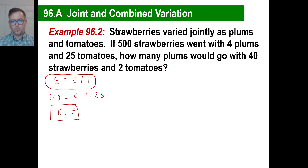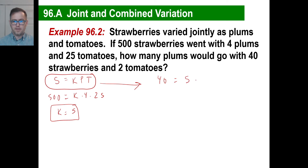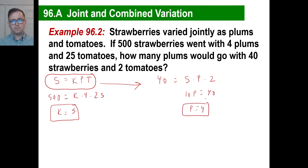So we know k is 5. How many plums would go with 40 strawberries and 2 tomatoes? We're going to fill in the blanks: 40 strawberries equals 5 times p times 2 tomatoes. So 5 times 2 is 10, meaning 10p equals 40. So plums equals 4. Pretty simple.